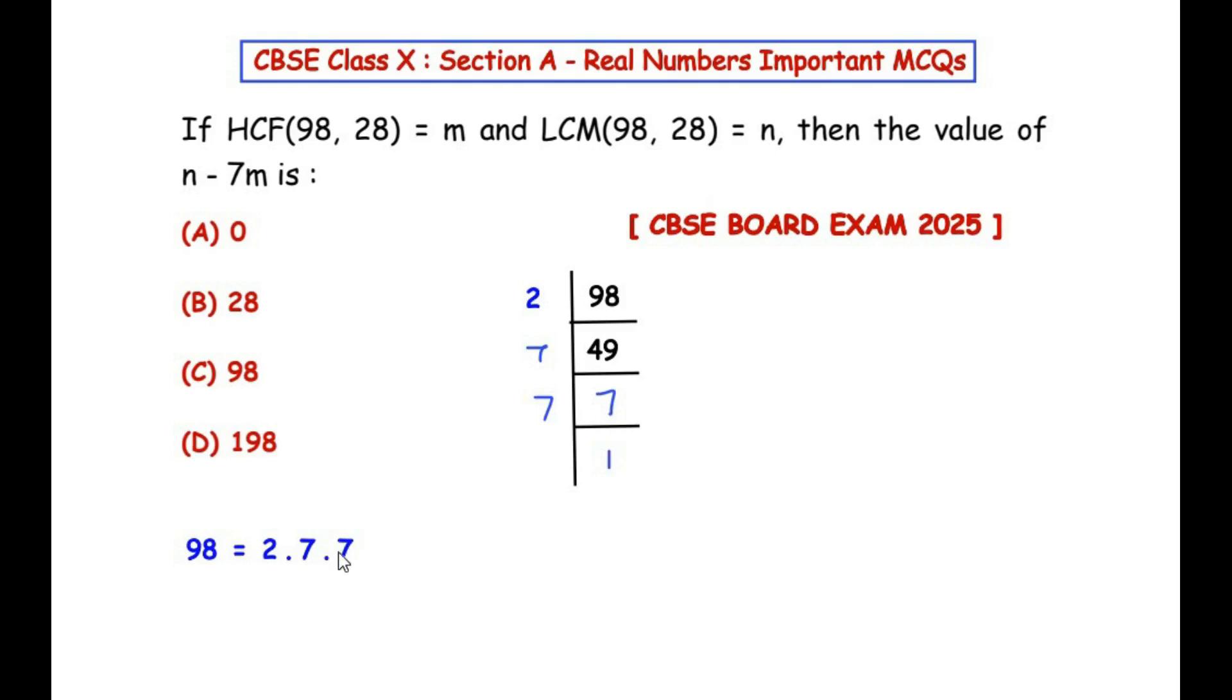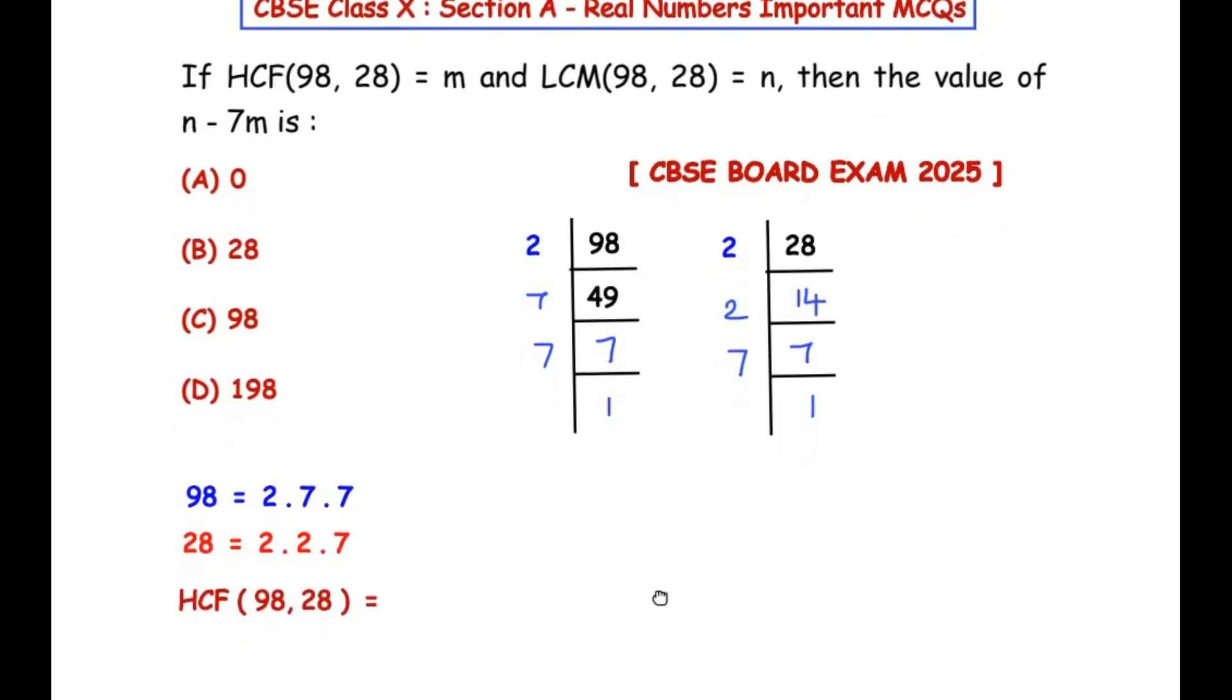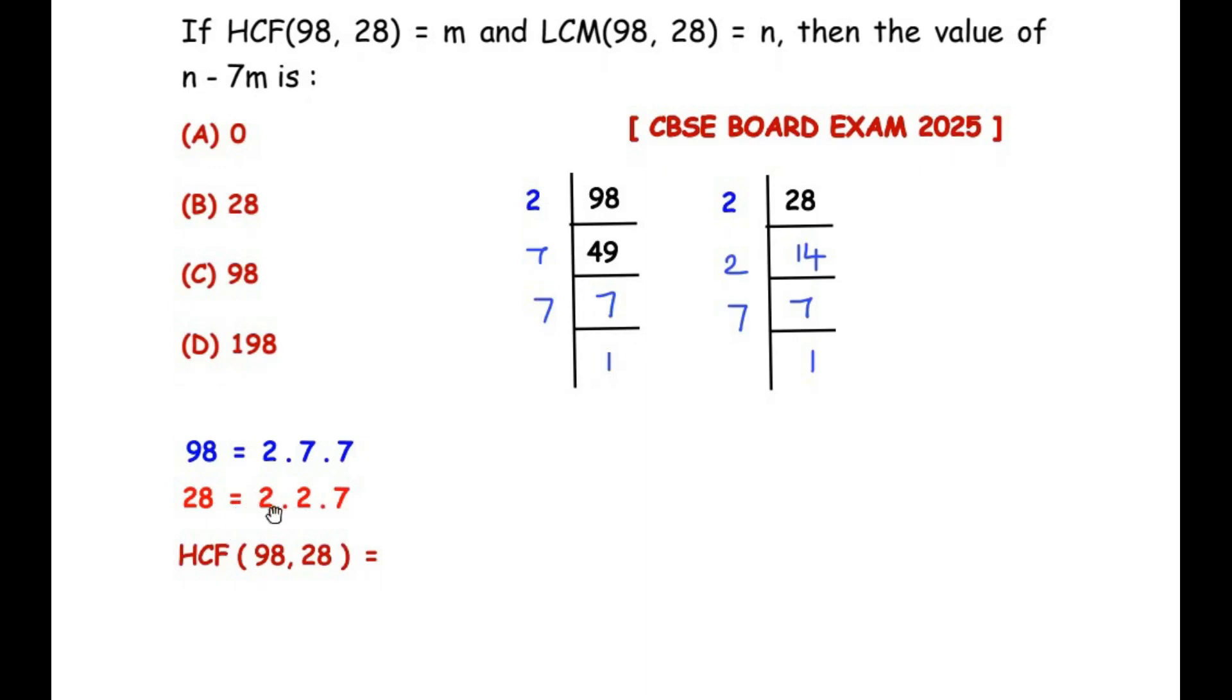Now let's prime factorize 28. Here 28 goes in the table of 2, that is 2 times 14 is 28. 14 again goes in the table of 2, that's 2 times 7 is 14. Now 7 goes in its own table, 7 times 1 is 7. So the prime factors of 28 are 2 times 2 times 7.